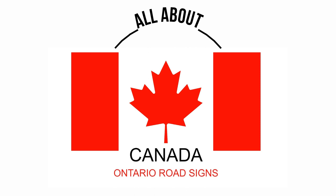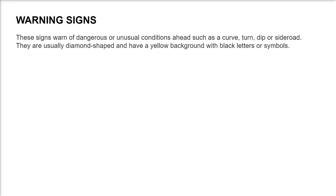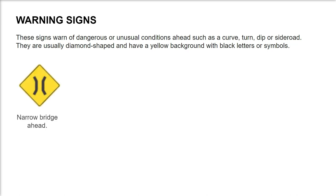Ontario road signs: warning signs. These signs warn of dangerous or unusual conditions ahead, such as a curve, turn, dip, or side road. They are usually diamond shaped and have a yellow background with black letters or symbols.